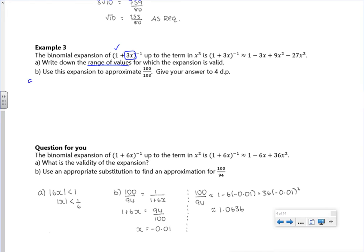So I'm going to do part a, and I'm going to say it's valid with a modulus of 3x is less than 1. Now what that's really saying is that -1 is less than 3x is less than 1. So if I divide through by 3...